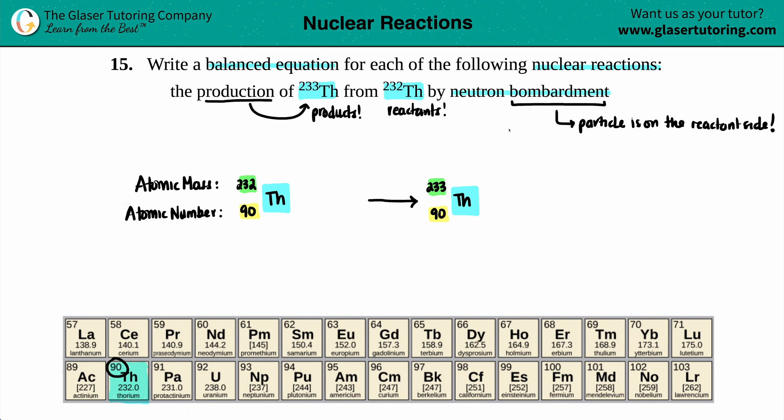What particle are we specifically talking about? It's a neutron. So let's have that notation ready to go. It's going to be this thorium plus this new particle here.